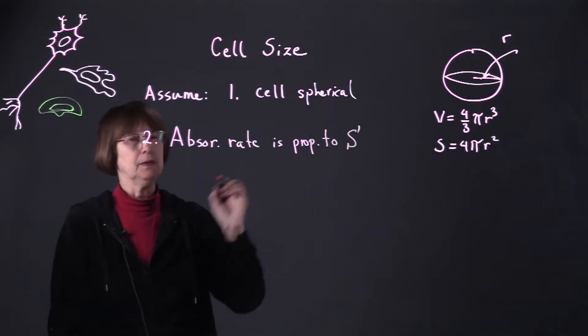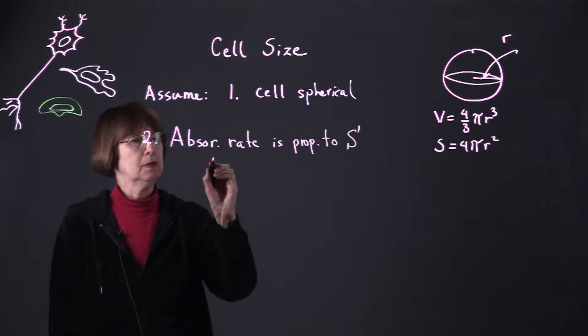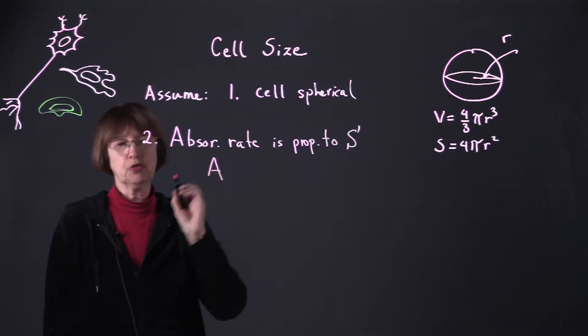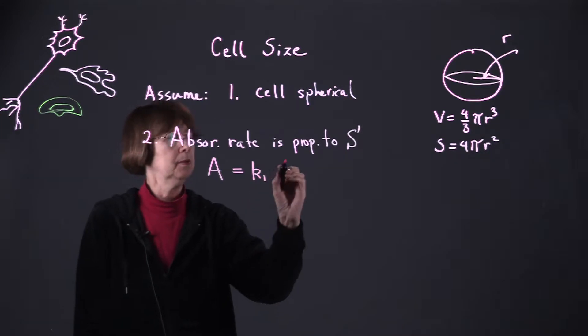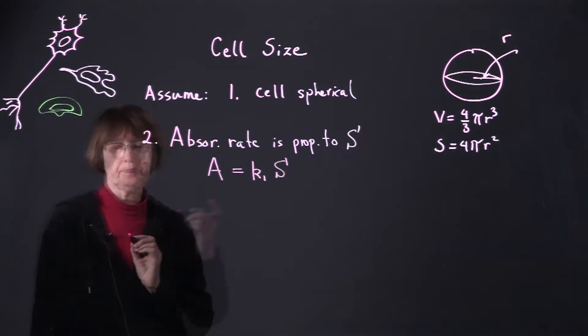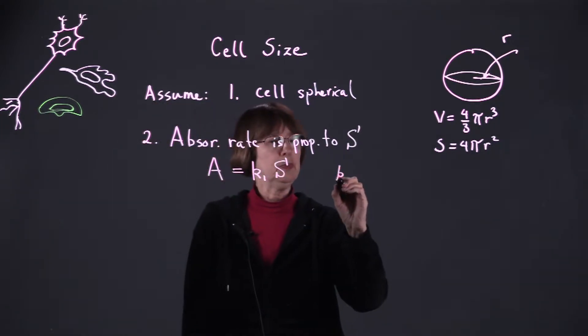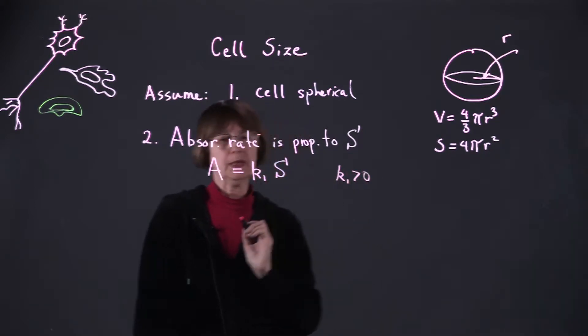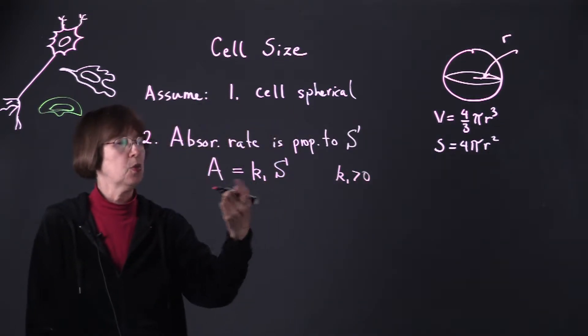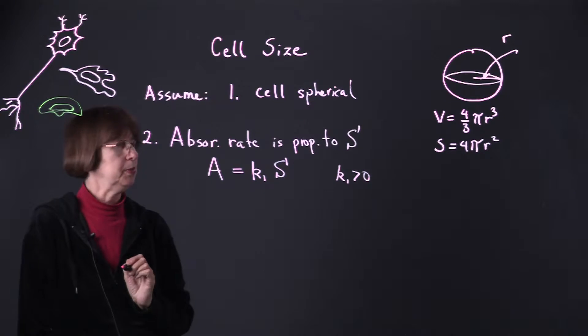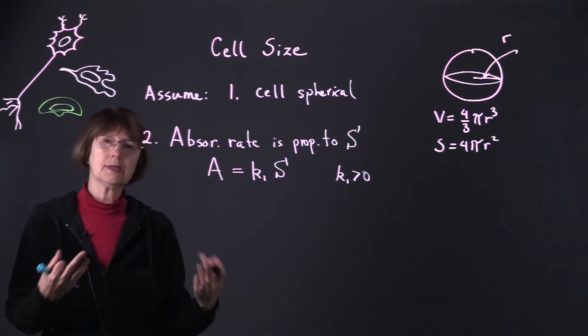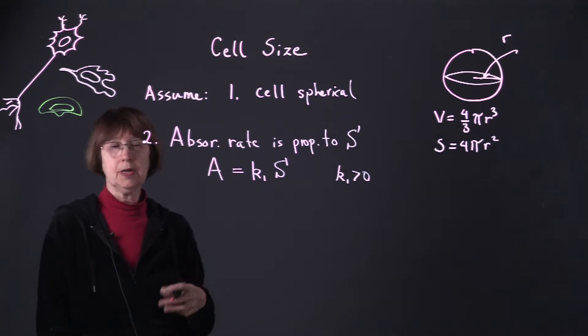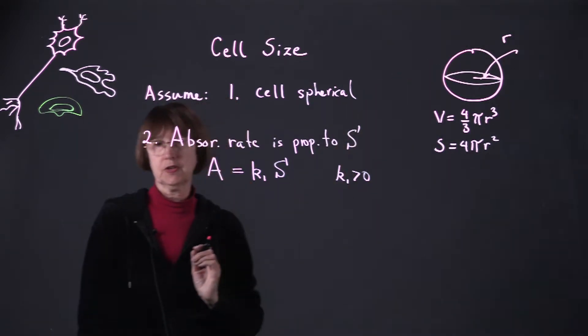Now what does that mean? That means that we're assuming that the absorption rate that we'll call A is simply some constant multiplied by the surface area. This constant should be positive in order to make sense, since both of these quantities have to also be positive, and it reflects something about how quickly nutrients can enter per unit time per unit surface area.